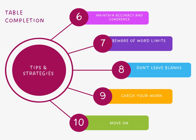Don't leave blanks — if you are unsure about a particular answer, make an educated guess. It is better to provide some information than to leave a cell blank; you might still earn partial credit if your guess is somewhat relevant. Once you've completed the table, take a moment to review your answers, ensure that you have filled all the required cells, and double-check for any spelling or grammatical errors. If a particular cell is too challenging, move on and come back to it later. Remember, practice is essential for improving at table completion.